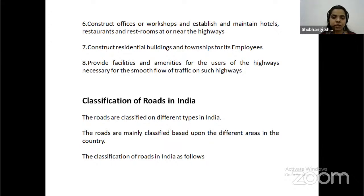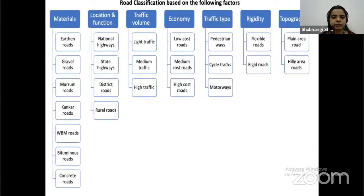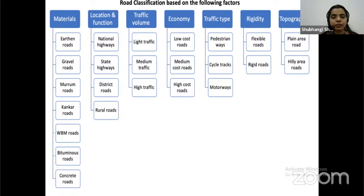Classification of roads in India: roads are classified based on different factors. Based on materials: earthen road, gravel road, moorum road, concrete road, WBM road, bituminous road, and concrete road. Based on location and function: national highway, state highway, district highway, and rural roads. Based on traffic volume: light traffic, medium traffic, and high traffic. Based on economy: low cost road, medium cost road, and high cost road. Based on traffic type: pedestrian, cycle type, motorways. Based on topography: plain roads and hilly roads.